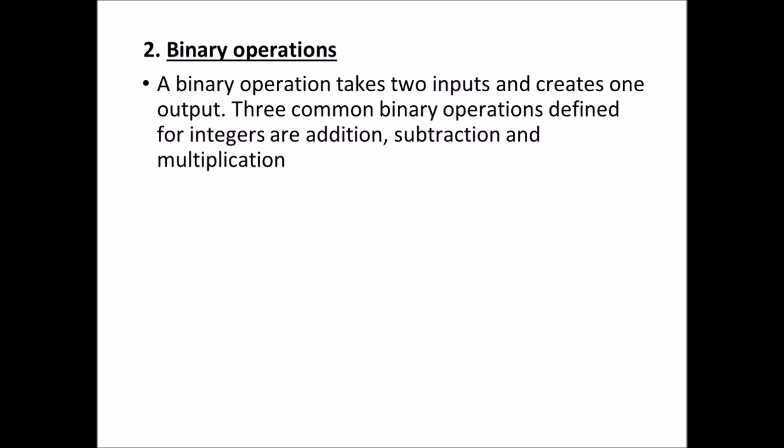Binary operations. A binary operation performs an operation on two inputs and produces a single output. A binary operation has two operands and one operator. For example, A and B are the two inputs for the binary operation and C is the single output produced. In cryptography, we are interested in three binary operations applied to the set of integers. The three binary operations defined for the set of integers are addition, subtraction, and multiplication.